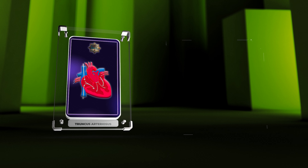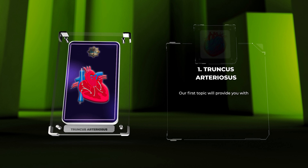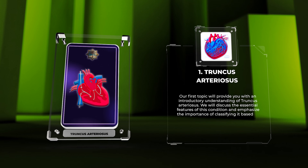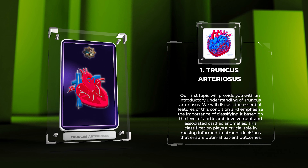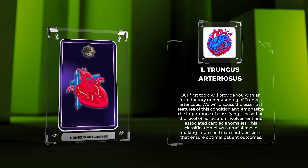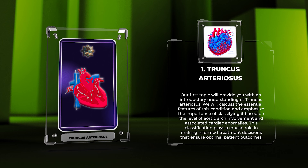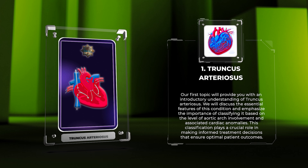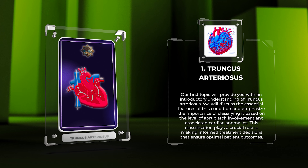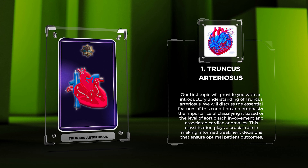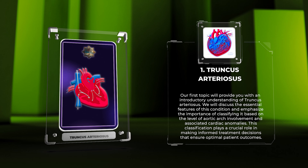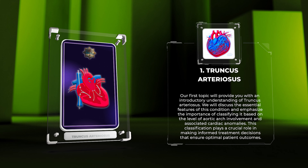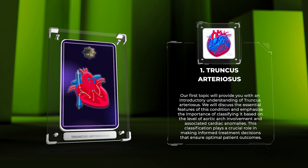Our first topic will provide you with an introductory understanding of truncus arteriosus. We will discuss the essential features of this condition and emphasize the importance of classifying it based on the level of aortic arch involvement and associated cardiac anomalies. This classification plays a crucial role in making informed treatment decisions that ensure optimal patient outcomes.